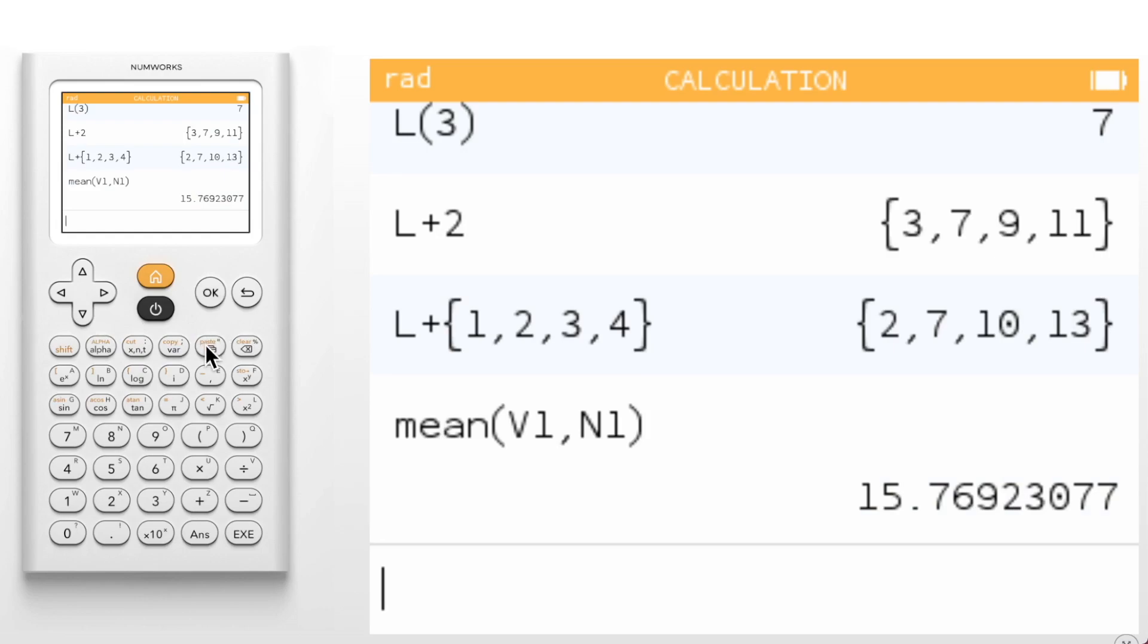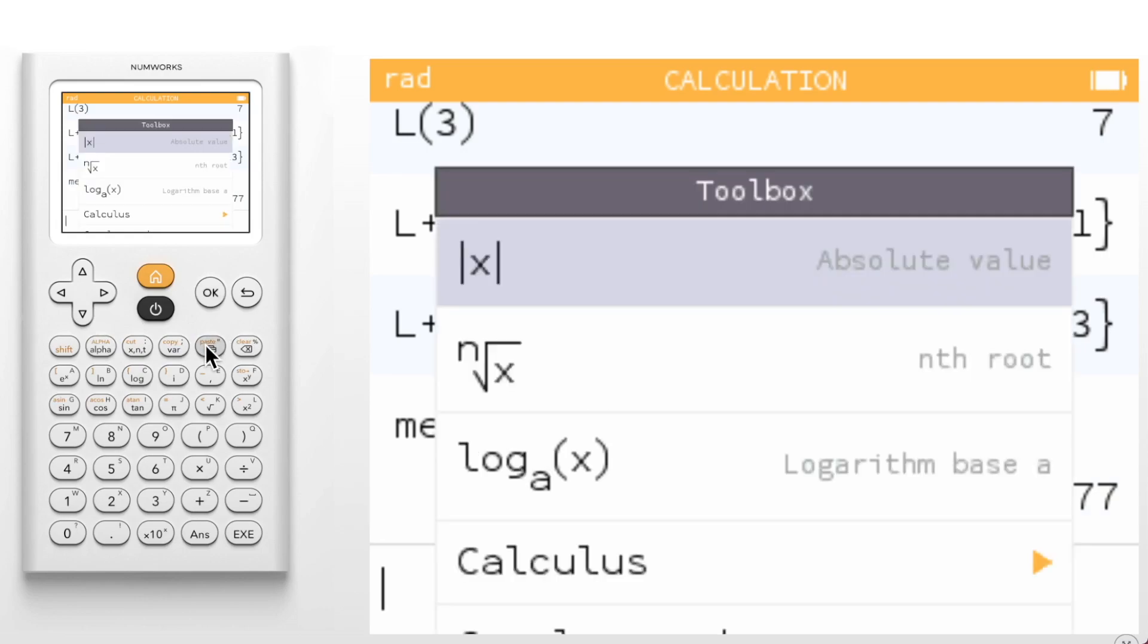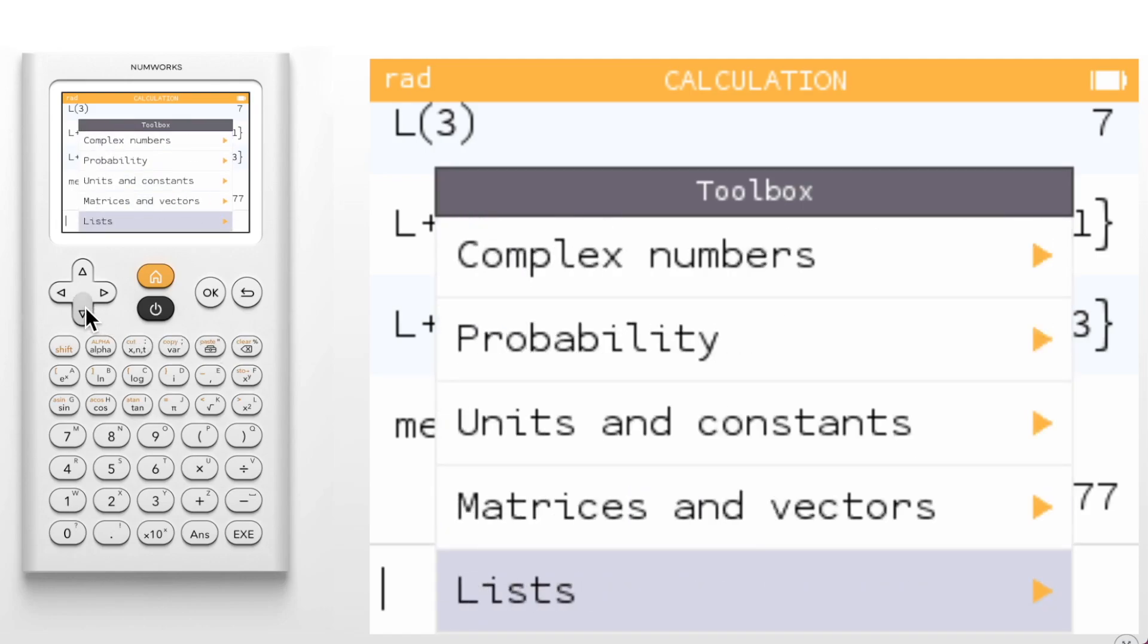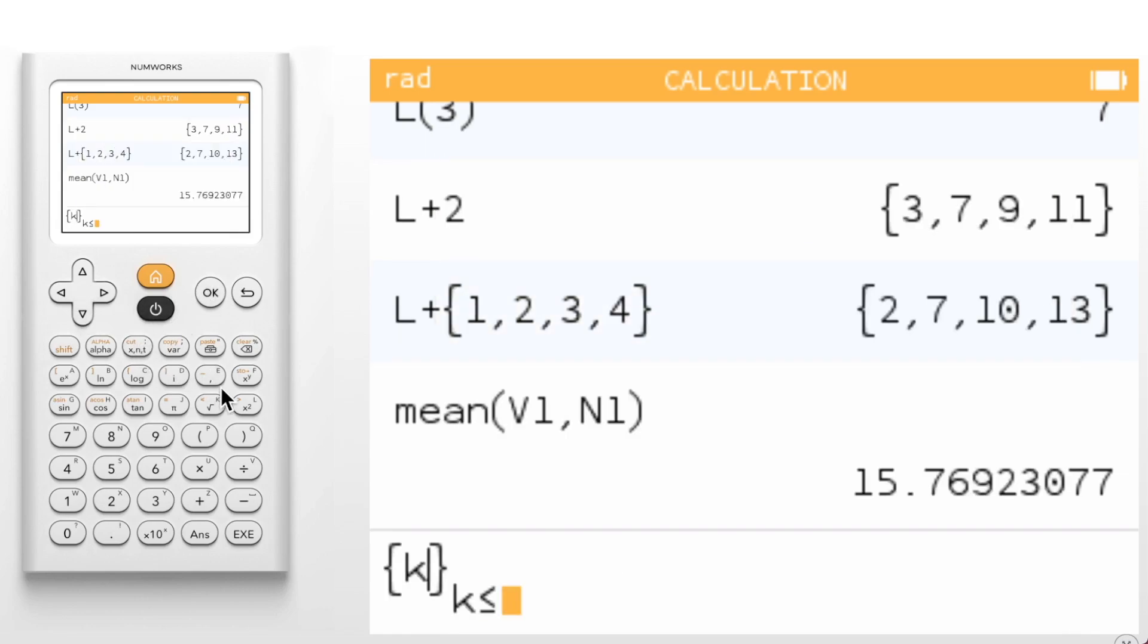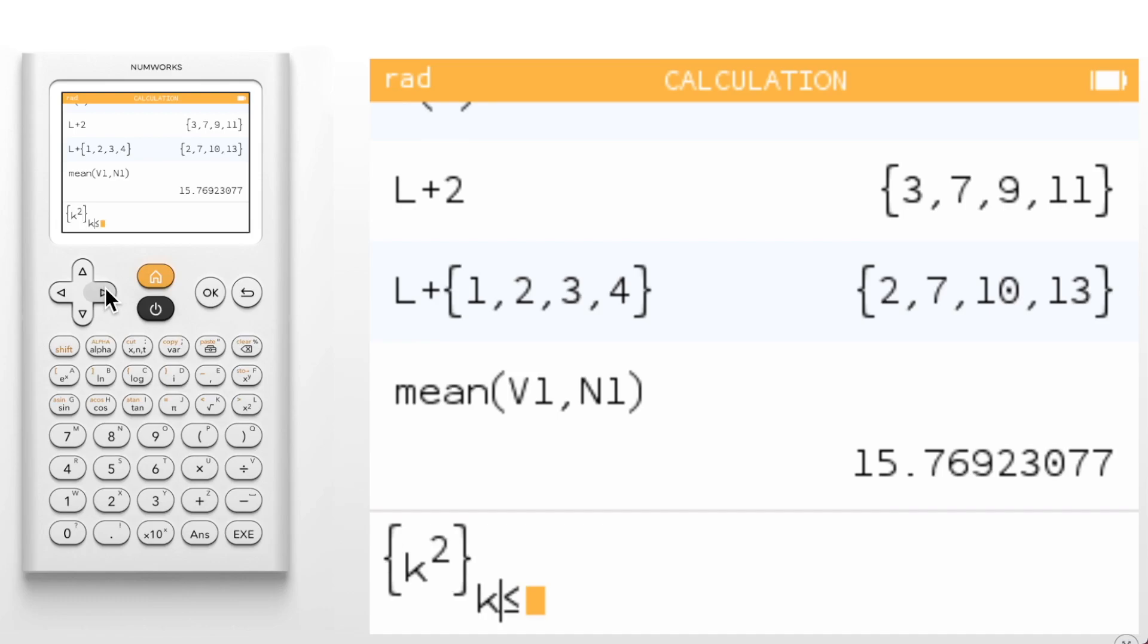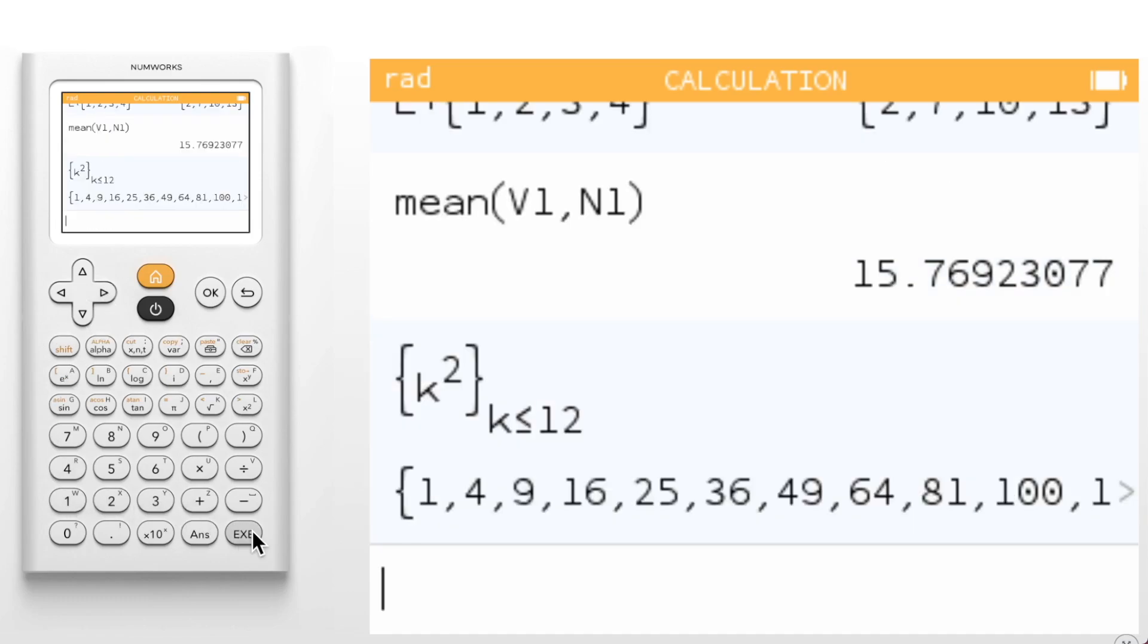Instead of creating a list manually, you can also generate a list from a function similar to in the statistics application. When we select this option, we first input a function, for example, k squared, and then an upper bound. Let's use 12. We now have a list of perfect squares.